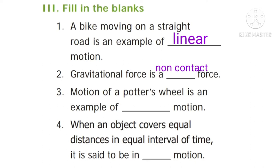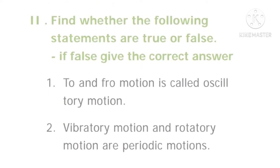Third question: motion of a potter's wheel is an example for dash motion. Answer: rotatory motion. Fourth question: when an object covers equal distances in equal intervals of time, it is said to be in dash motion. Answer: uniform motion.